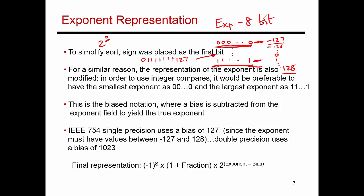So that's how I would represent the value 2 to the power 0. If I want to represent 2 to the power 128, I would put all 1s into my exponent field, read that out, subtract 127, and that gives me the true exponent, which is 128. So the final representation is minus 1 to the power s, times 1 plus the fraction — just as before — but it's 2 to the power of exponent minus the bias, which is 127 in single-precision floating-point, and is as high as 1023 for double-precision floating-point values.